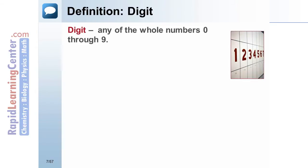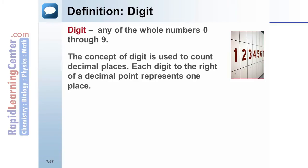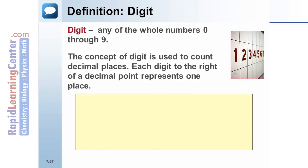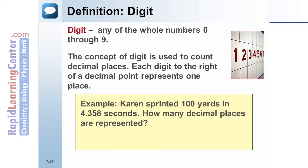A digit is any of the whole numbers zero through nine. The concept of digit is used to count decimal places — each digit to the right of a decimal point represents one place. Example: Karen sprinted 100 yards in 4.358 seconds. How many decimal places are represented in her time?